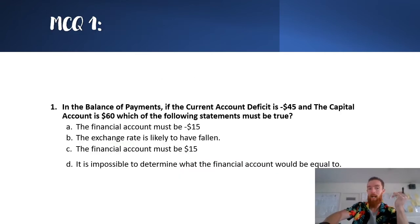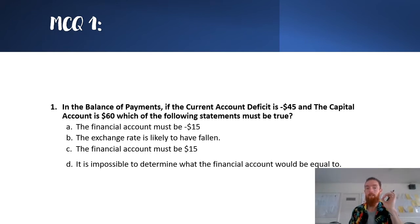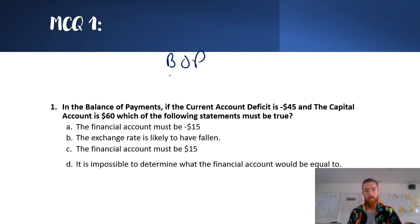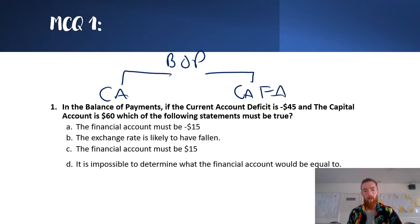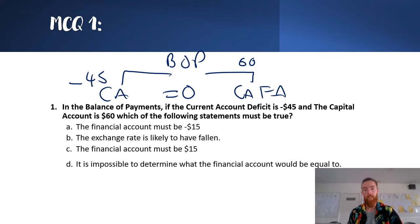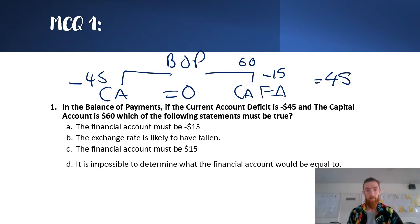For a multiple choice practice question: in the balance of payments, if the current account deficit was negative $45 and the capital account was $60, which of the following statements must be true? In the balance of payments, the current account on one side and the capital and financial account on the other must all cancel out to equal zero. So if the current account is negative 45 and the capital account is 60, we need to find what makes it zero. We need this side to equal positive 45 — which means the financial account must be negative 15.